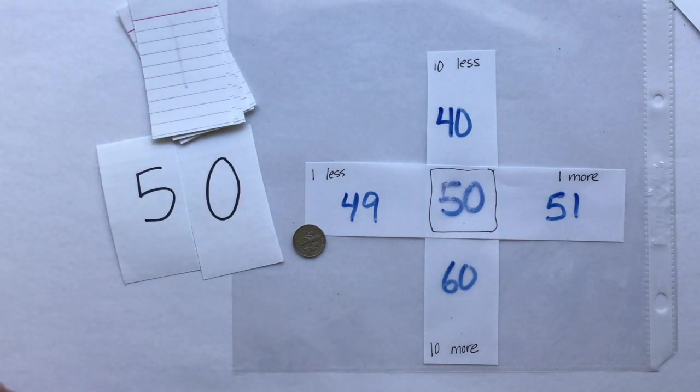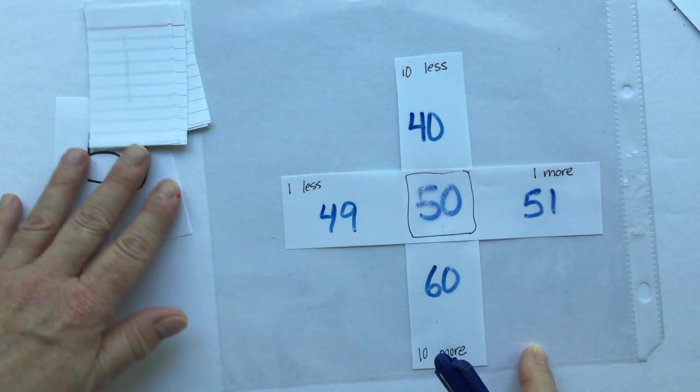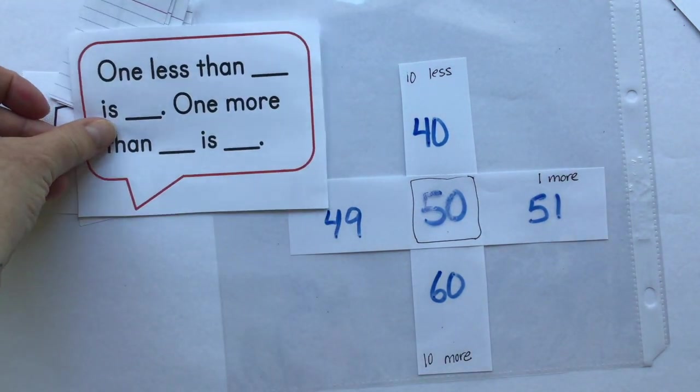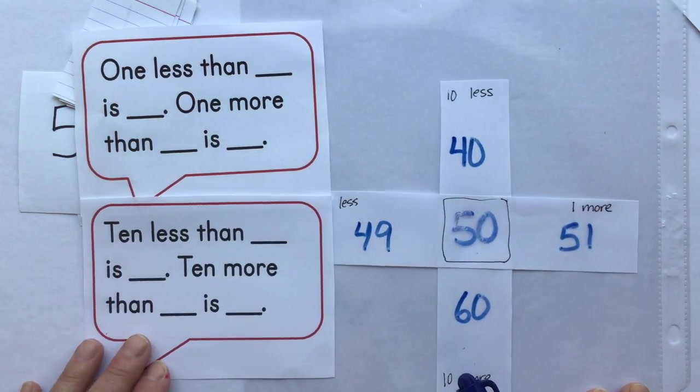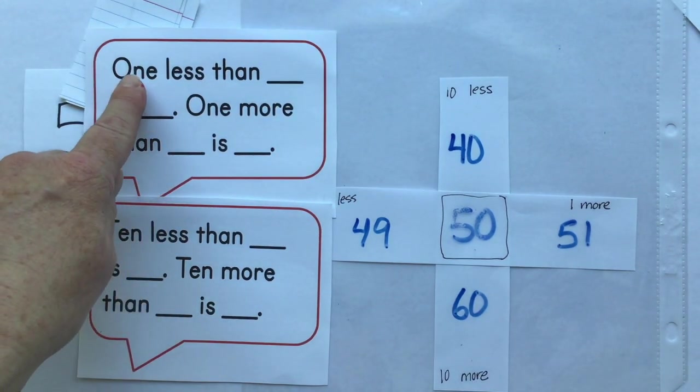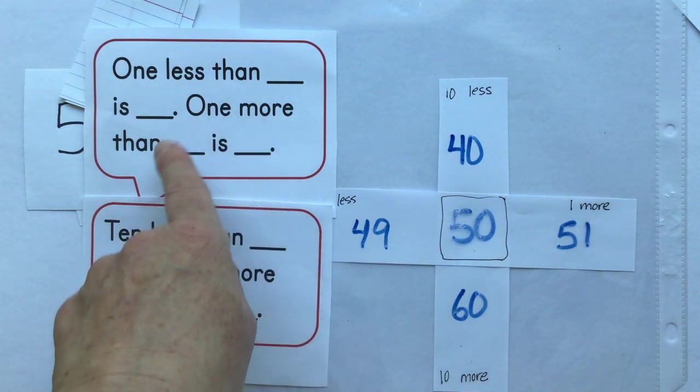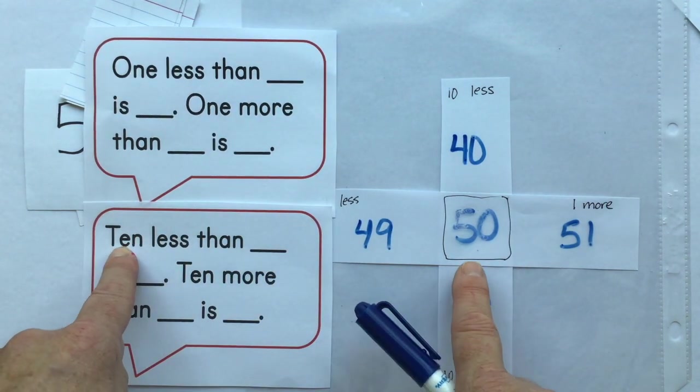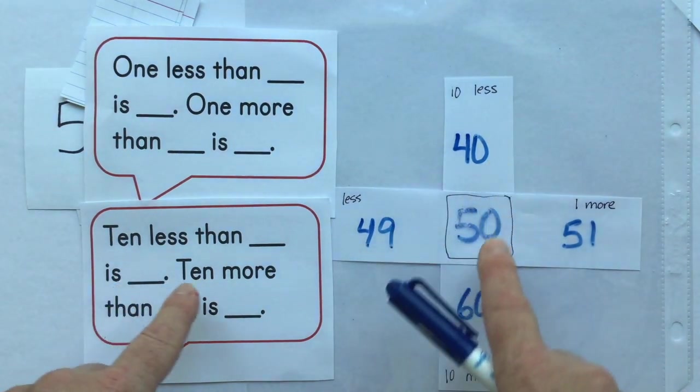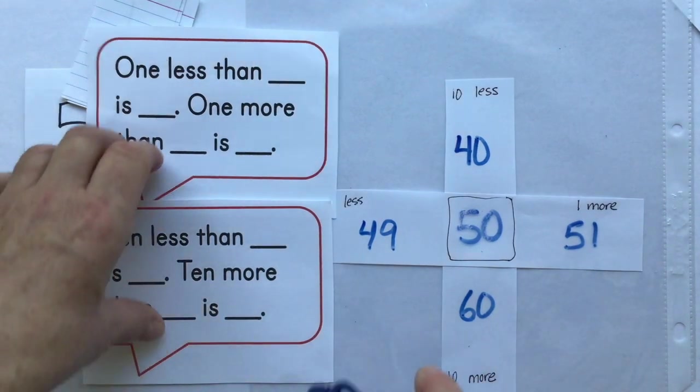So now the next step in our game is for you to just practice saying this with your sentence frames. So you're going to talk out loud. We'll start here. You'll turn and tell your partner. One less than 50 is 49. One more than 50 is 51. 10 less than 50 is 40. 10 more than 50 is 60.